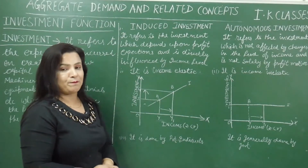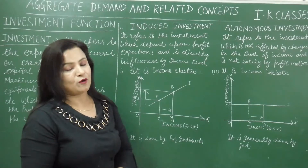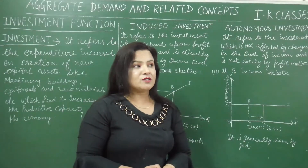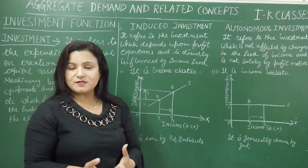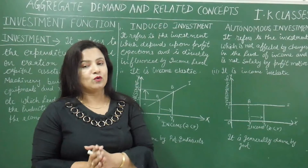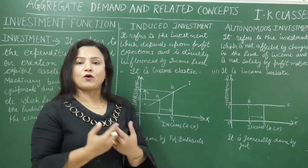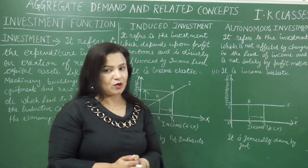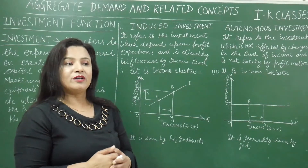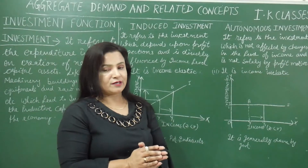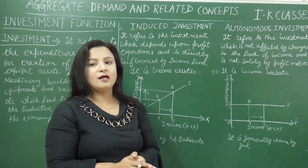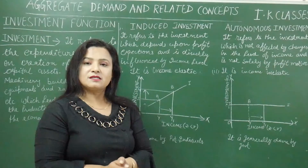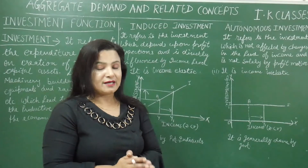Autonomous investment mainly depends on the rate of interest. Firms generally take loans or borrow money to invest. If the rate of interest is high, investment will be less; if the rate of interest is low, investment will be more. So there is a negative relationship between the rate of interest and investment.